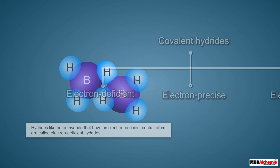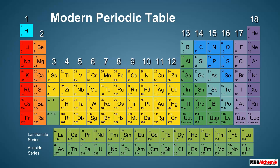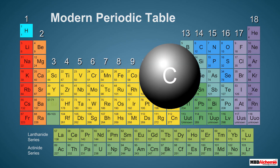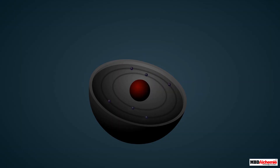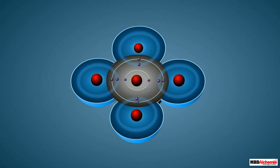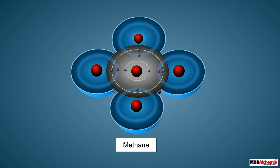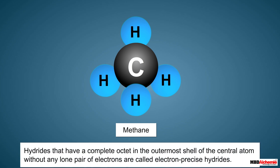Hydrides like boron hydride that have an electron deficient central atom are called electron deficient hydrides. Electron precise hydrides are formed by group 14 elements like carbon. A carbon atom has four electrons in its outermost shell, and using these four valence electrons it forms four covalent bonds with four hydrogen atoms, resulting in the formation of methane. The outermost shell of carbon has eight electrons, all involved in bonding with no lone pair of electrons. Such hydrides are called electron precise hydrides.